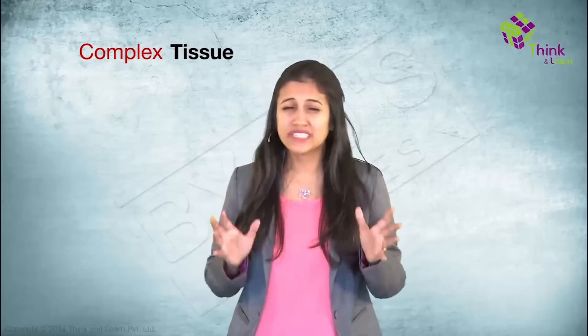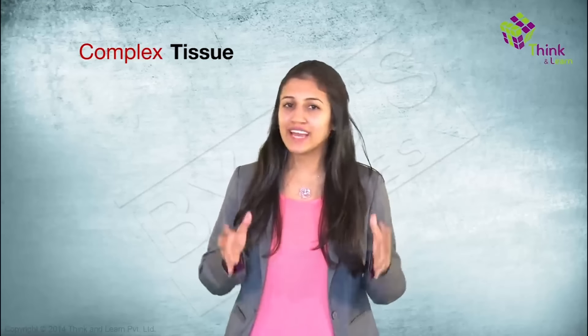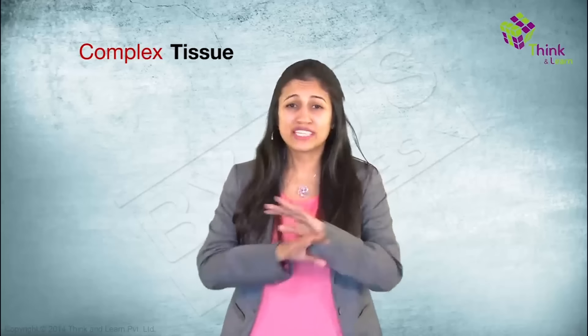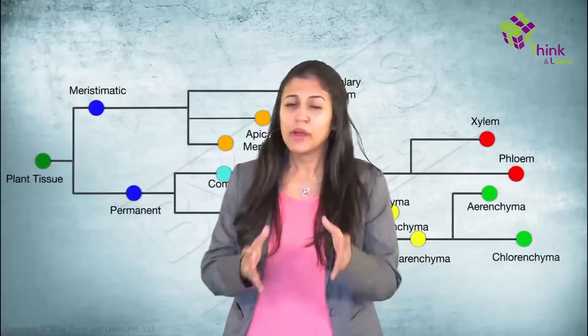The next major type of plant tissues that you would come across are called complex tissues. And there's actually nothing complex about these tissues. They are just a combination of two or more simple tissues. Two important complex tissues have nice sounding complicated names to add to the complication, which gives us absolutely no indication of what they do. Xylem and phloem.